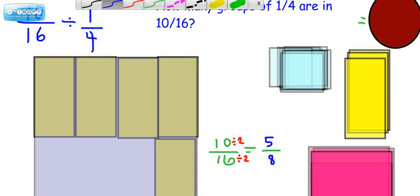I'm going to use the reduced version, by the way, of the 10/16. That's the same as 5/8 divided by 1/4, which, remember, is the same as multiplying by the reciprocal. Now, if we change this to multiplication, and this to its reciprocal, that would be 4 over 1.